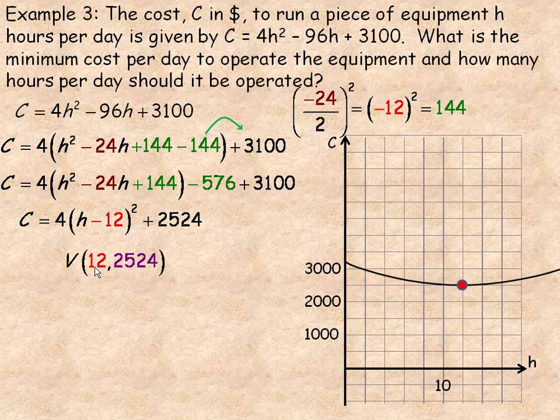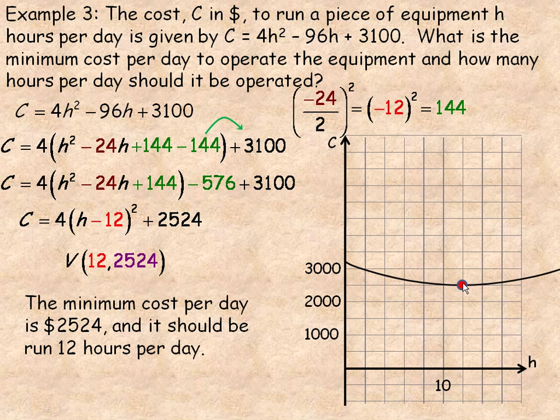Now, the 12 is the time in hours. The 2524, this second coordinate, is the cost per day. So then we would answer that the minimum cost per day, the lowest cost, is $2524, and it would occur when the piece of equipment is run for 12 hours per day.